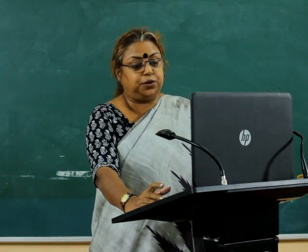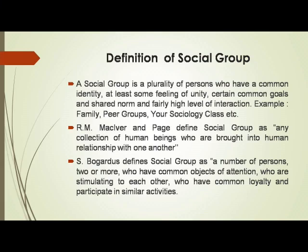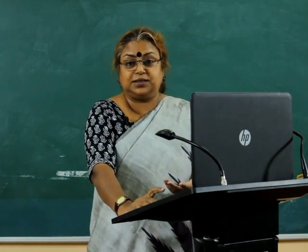Whereas a societal group is a collectivity of persons who share certain common values and interests, and perhaps some feeling of solidarity — for example, religious groups, national groups, etc. A social group is a plurality of persons who have a common identity, at least some feeling of unity, certain common goals, shared norms, and a fairly high level of interaction — for example, family, peer groups, and your sociology class.